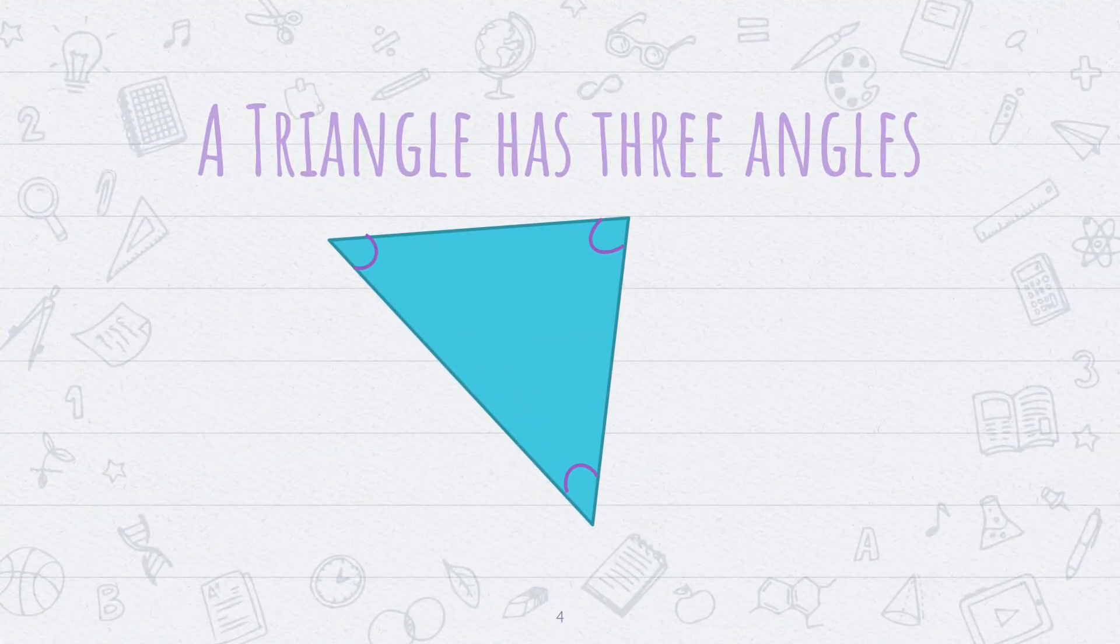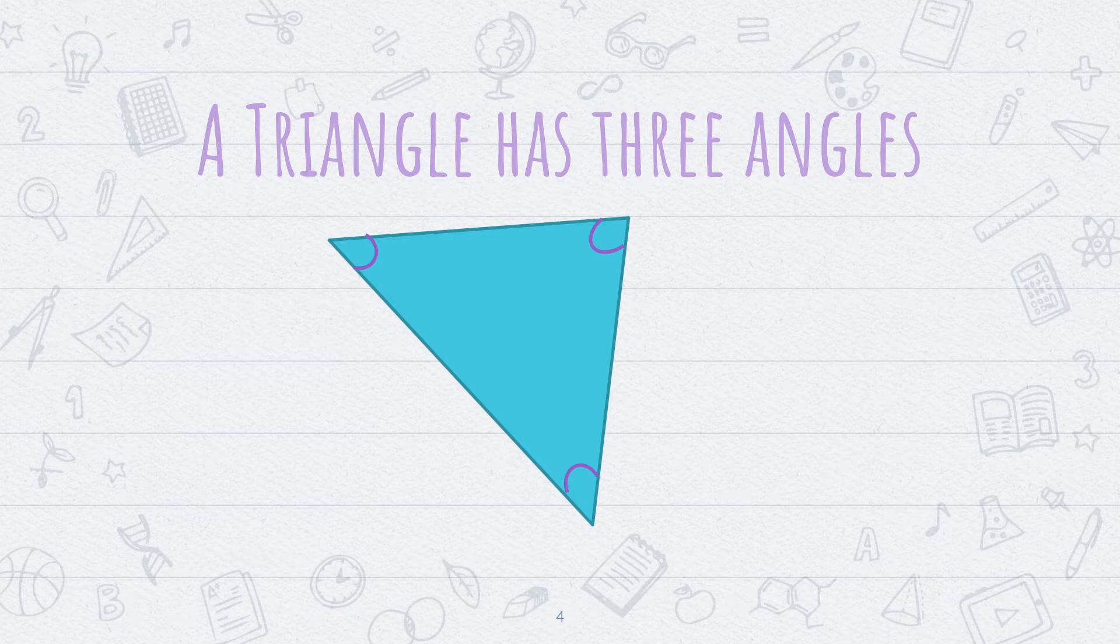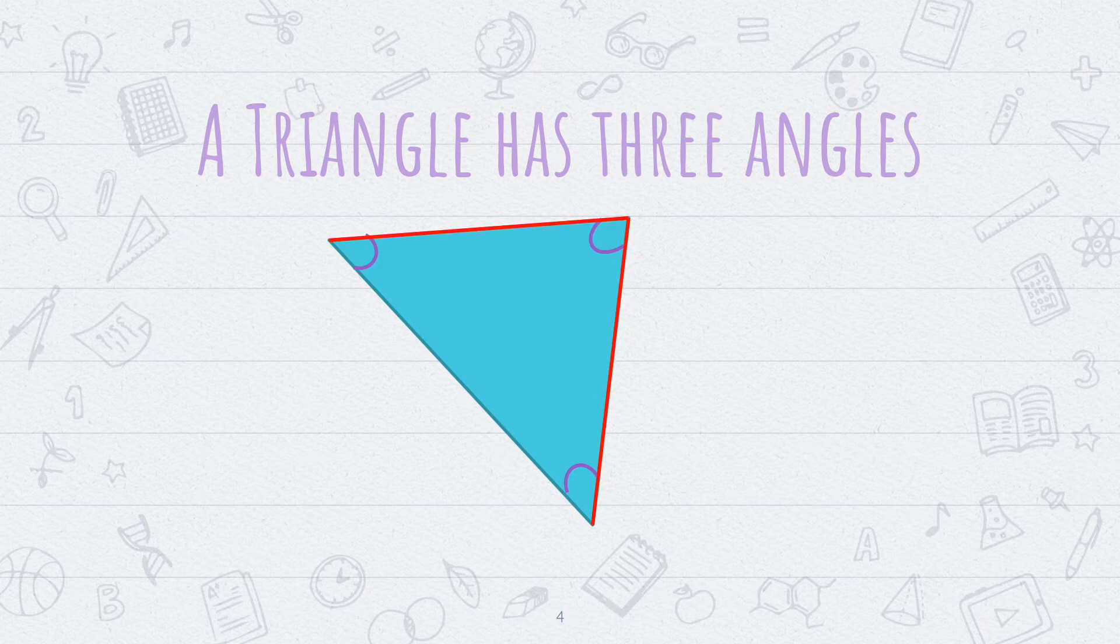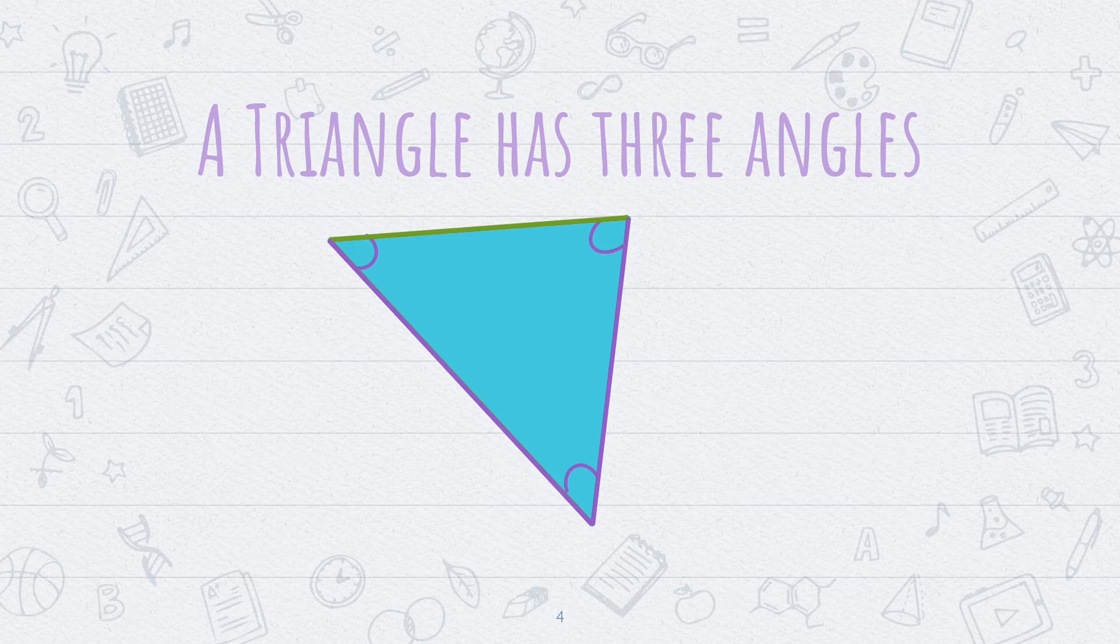A triangle also has three angles. These curved purple lines show the angles of the triangle. This is the first angle, the second angle, and the third angle. So a triangle is a closed figure that has three sides, three vertices, and three angles.